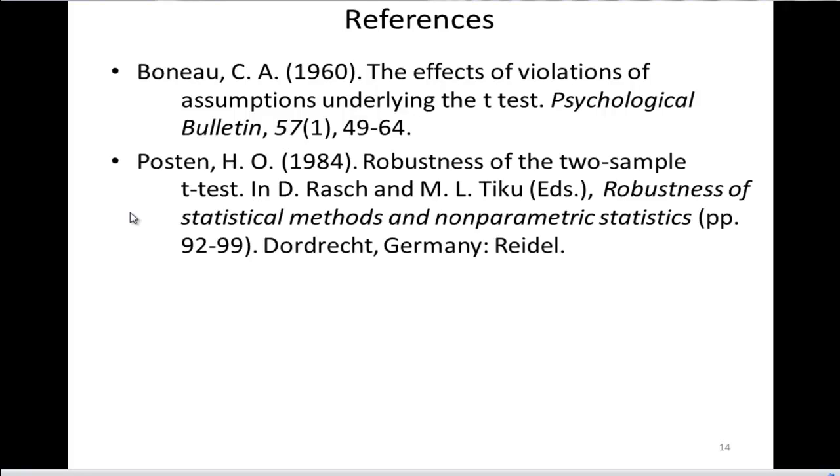Posten has done several papers, extensive ones, and a good one is 1984, where he tabulated a bunch of the robustness across a number of conditions. And in contrast to Schmider et al., he actually looked at sample sizes as low as 5 instead of just 25. And overall, the robustness applies. It's true that the robustness increases as sample size increases. And Posten suggests that a sample size of 15 is totally fine for the t-test and ANOVA.